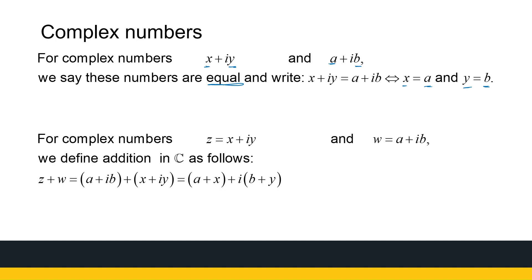So then we look at how to add two complex numbers. When you were first introduced to numbers, you figured out what a number is and then you do things with them — you add, subtract, multiply, divide. We're going to do similar things for complex numbers. The way we add two complex numbers is by adding the real components and adding the imaginary components. Nothing strange about that definition.